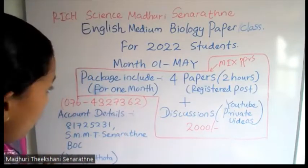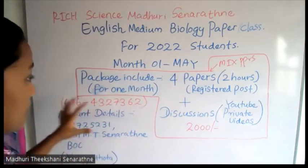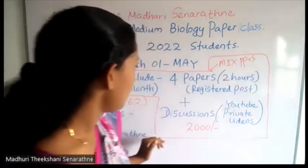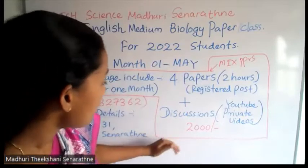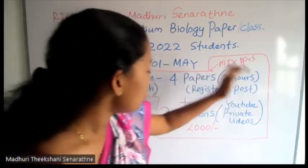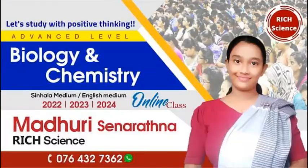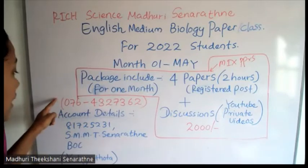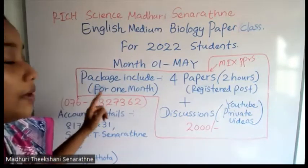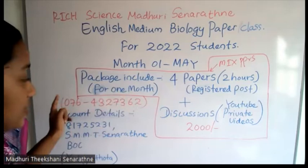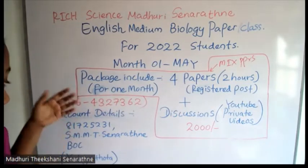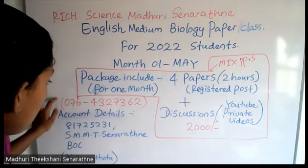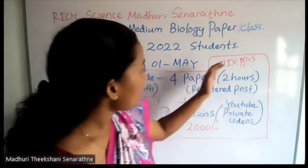One paper package — four papers and their discussion videos — is 2000 rupees only. This is my contact number; you can contact me via WhatsApp. After doing your payment, please send me your payment evidence to this number.